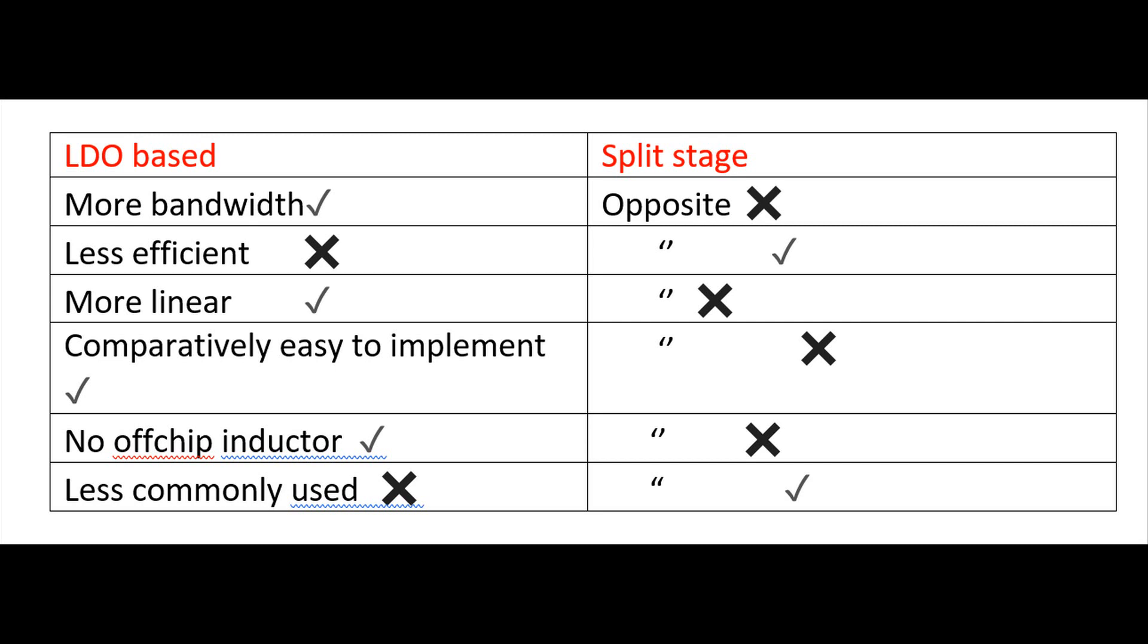This is because split stage uses switching mode power amplifier. LDO based tracker is relatively easy to implement because it just consists of a linear amplifier and a feedback configuration and a power transistor, but the split stage is more complicated. It has more blocks involved.